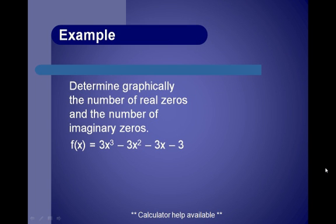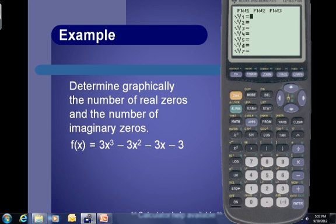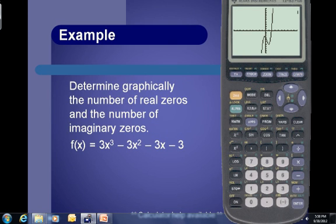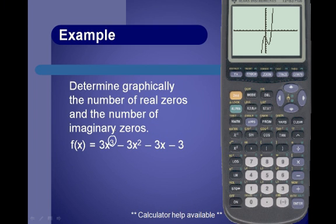Let's do an example. Determine graphically the number of real zeros and the number of imaginary zeros. Because it says determine graphically, let's pull up our calculator and enter our function. So if we enter 3x³ minus 3x² minus 3x minus 3 and graph it, we get a picture that looks like this. The highest power is 3, which means we are looking for at most 3 solutions. But looking at our graph, notice there's only one x-intercept.